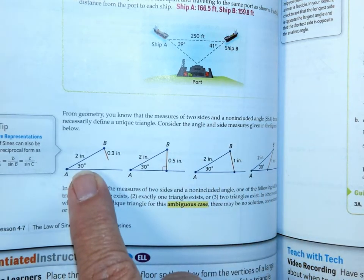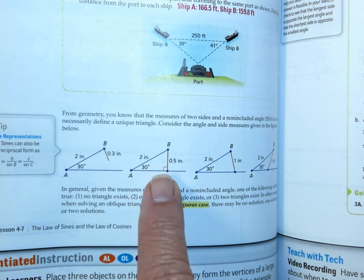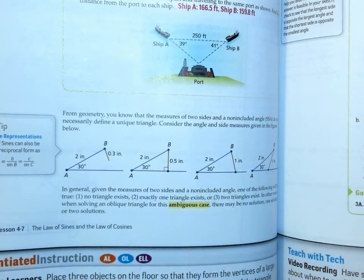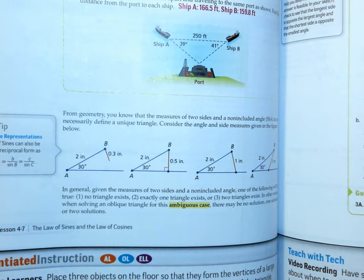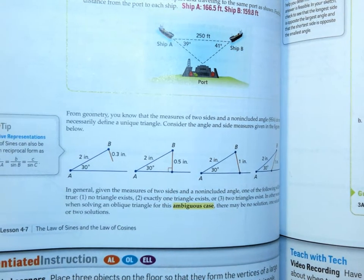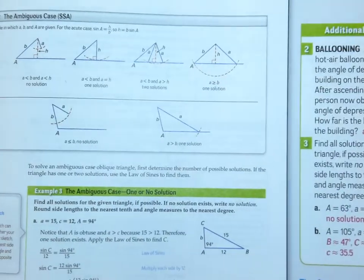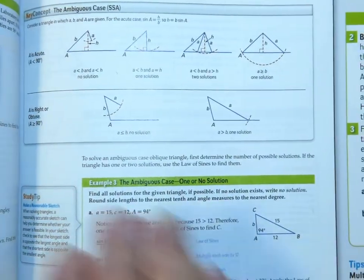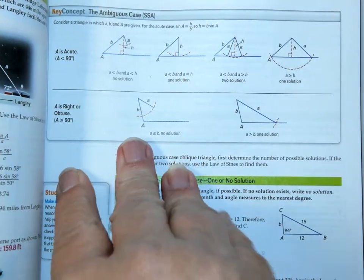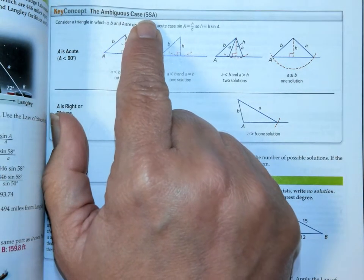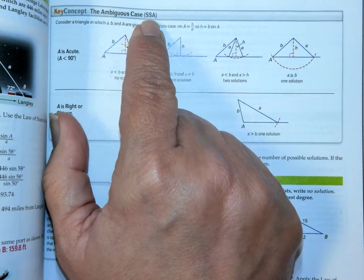So there could be no solution, one solution, or two solutions. So what are we going to do with that if it's just kind of a mystery? Well, this is your little chart that you're going to need to follow. Whenever you're dealing with the ambiguous case, whenever you're dealing with a side, a side, and an angle.